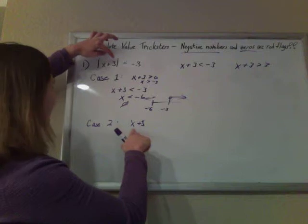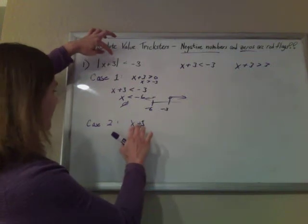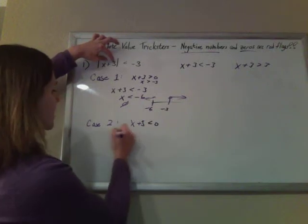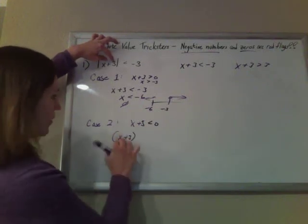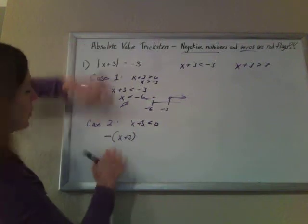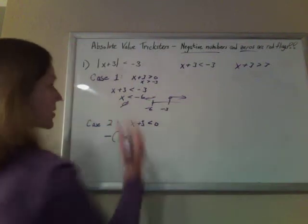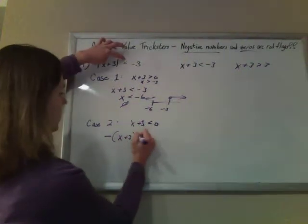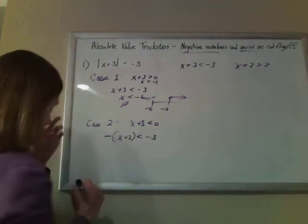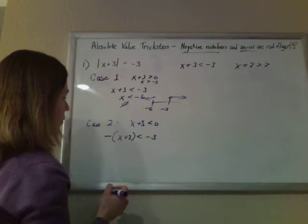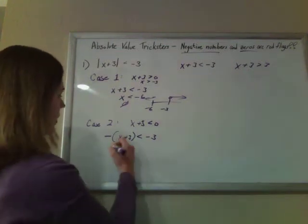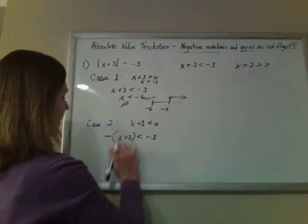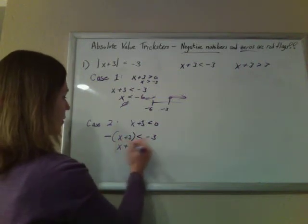So, case 2, this is supposed to be negative, in which case the absolute value will take that negative and make it negative. Therefore, the negative negative will be the positive number that we expect to come out of the absolute value, and that would be less than negative 3. So now, when we're solving this, we could say divide by a negative and get that case that x plus 3 is greater than 3.